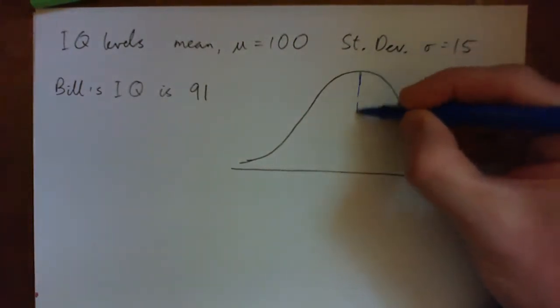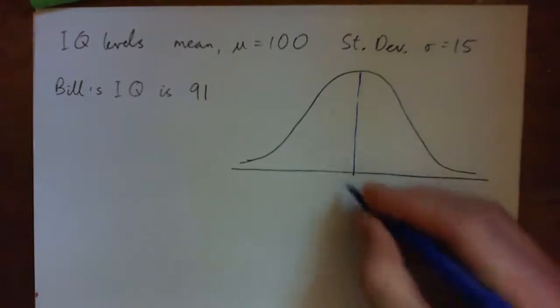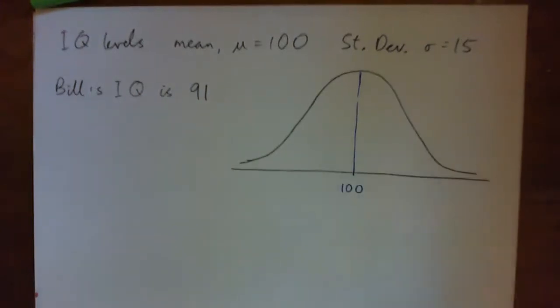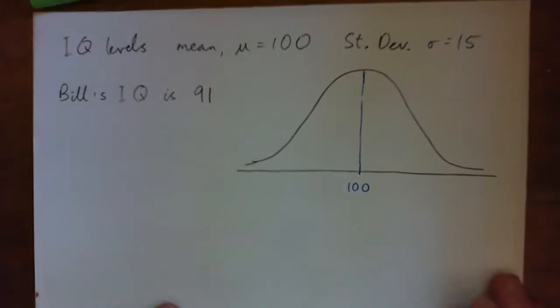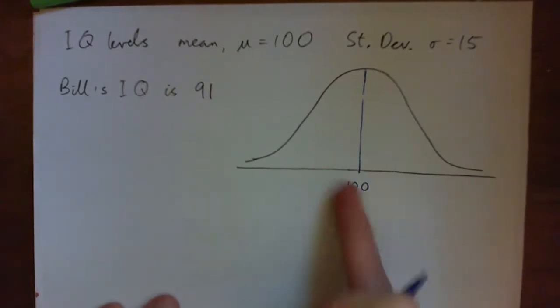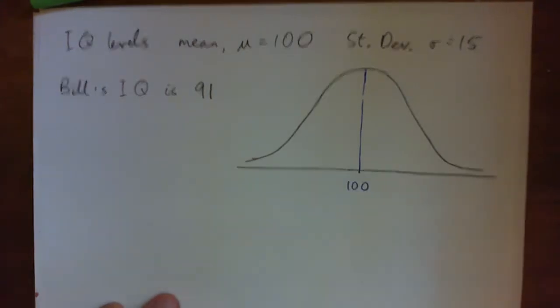So the mean is 100, and that means that half of the population have an IQ level of less than 100, and half of an IQ level above 100. You okay with that? Okay.